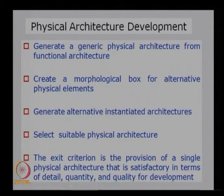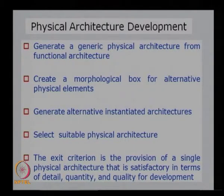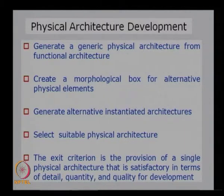How do we develop this physical architecture? It starts with the functional architecture — it is the logical next step after developing the functional architecture. We develop a very generic physical architecture from the functional architecture. A generic physical architecture is a conversion of the functions into components, but we do not identify the exact component; we just use the generic name or a generic way of representing that function as a component.